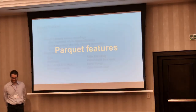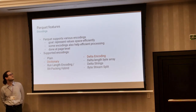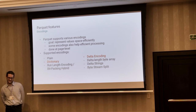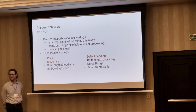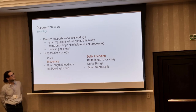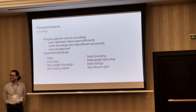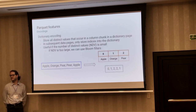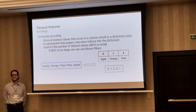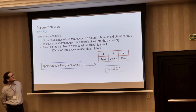Now let's look at some key features. The goal of encodings is to represent values on disk, usually in a space-efficient manner. Some encodings also make it possible to process data more efficiently. In Parquet, encoding is done at the page level. I've listed all the encodings currently supported by Parquet; Impala supports a subset of them. With dictionary encoding, we store all the distinct values that occur in a column chunk, make a dictionary of it, and in subsequent data pages we only store the indices into this dictionary. This is very useful and space-efficient if you have a small number of distinct values.